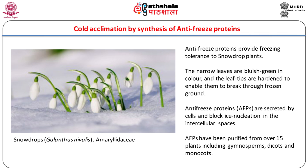Antifreeze proteins, known as AFPs, also known as ice binding proteins or IBPs, have evolved as an important adaptation in numerous organisms exposed to subzero temperatures. Antifreeze proteins are secreted by overwintering plants and provide freezing tolerance, as shown in snowdrop plants in the family Amaryllidaceae. The narrowed leaves are bluish-green in color and the leaf tips are hardened to enable them to break through frozen ground. Antifreeze proteins are secreted by cells and block ice nucleation in the intercellular spaces, and have been purified from over 15 plants including gymnosperms, dicots, and monocots.